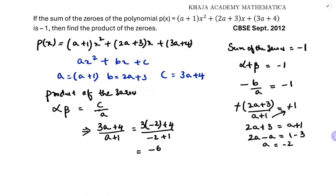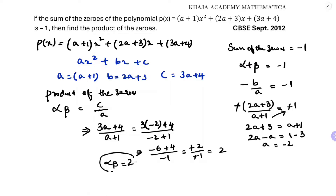That gives minus 6 plus 4 divided by minus 1, which is minus 2 divided by minus 1. The negatives cancel, giving 2. So the product of the zeros is 2. To summarize: the given sum of minus 1 was used to find a equals minus 2, and substituting into c by a gave us alpha times beta equals 2.